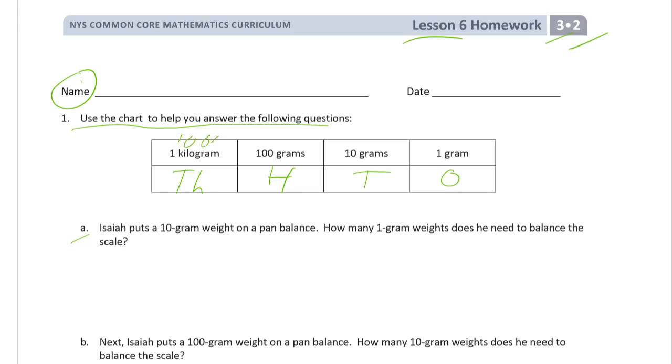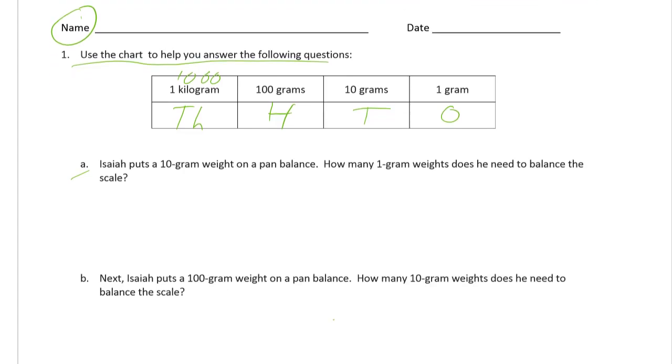So that's 1,000. Isaiah puts a 10 gram weight on a pan balance. How many 1 gram weights does he need to balance the scale? So if you drew a scale with a pan, it's a pan balance. So we have pans on here. And then we have a 10 here. It would be the same as having 10 ones. 1, 2, 3, 4, 5, 6, 7, 8, 9, 10. That would balance.